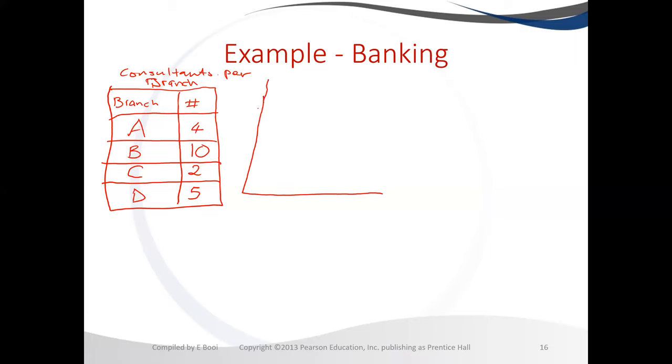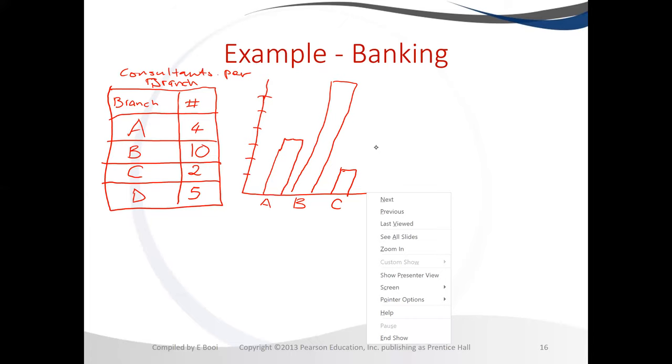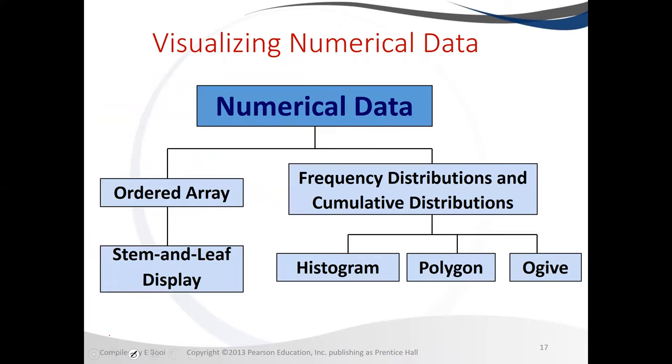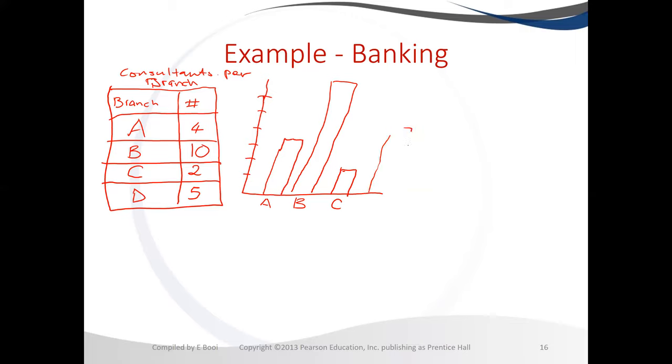And I know this side will be my number of consultants as the number. And I'm going to create for branch A, there are four consultants there. For branch B, there are 10. Let's say 10 ends there. So this is for A, this is for B. For branch C, there are only two consultants. And for branch D, there are five consultants. And this will be branch D.